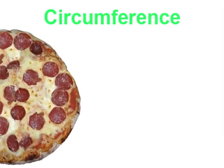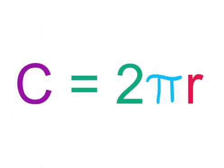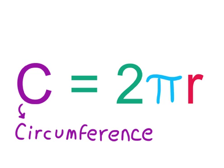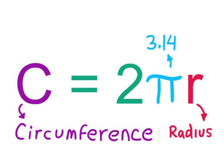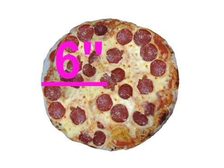To find the circumference of our 12-inch pizza, we will use a formula. C equals 2πr. C is our circumference. The pi sign represents 3.14, and r is our radius. Since we know that the diameter of our pepperoni pizza is 12 inches, we know that our radius must be 6 inches.